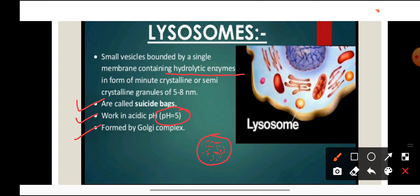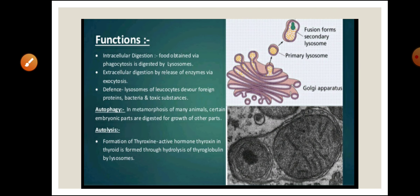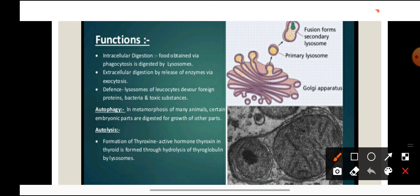The origin of organelles: endoplasmic reticulum originates from the nuclear membrane, Golgi complex is formed from the endoplasmic reticulum, and lysosomes are formed from the Golgi complex. Functions of lysosomes: the first important function is intracellular digestion — digestion of materials within the cell takes place with the help of lysosomes. Lysosomes also release their enzymes outside the cell by the process of exocytosis for extracellular digestion.